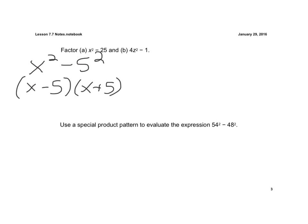And for letter B, for 4z squared, that's actually 2z all to the second minus 1 to the second. So now, my pattern is 2z minus 1 times 2z plus 1.